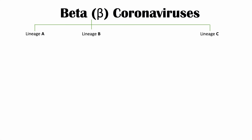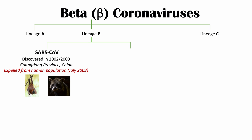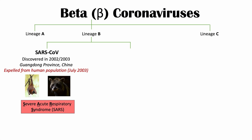The other beta coronaviruses are in lineage B and lineage C. In lineage B, the first is SARS-CoV or SARS coronavirus, officially discovered in 2003 but likely starting in 2002, seemingly originating in the Guangdong province of China. With concerted global efforts, this coronavirus was expelled from the human population in July 2003. It is believed the virus spread from a bat to a civet, and then from a civet to a human. This virus causes severe acute respiratory syndrome, or SARS.